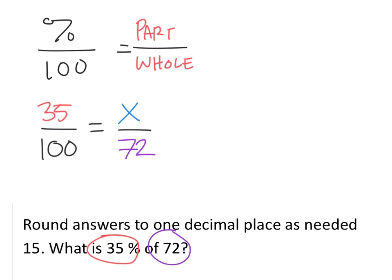And to solve this, we would simply cross-multiply there. We would have 100x, but 35 times 72 is going to be a little big, 2520.